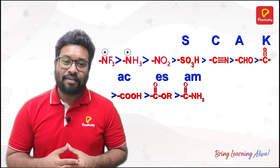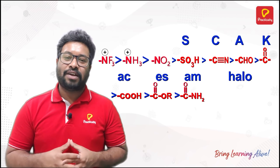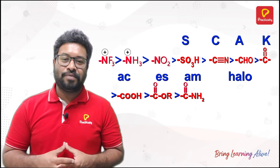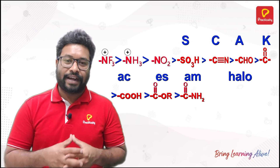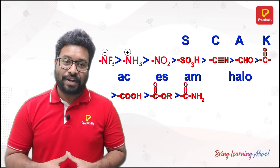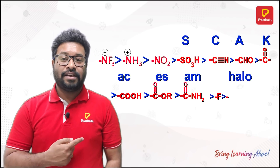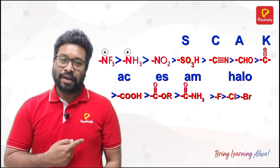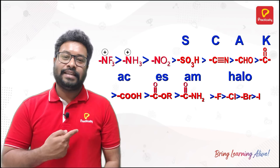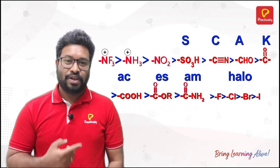That is then followed by halo. We know that all the halo groups, if we arrange them in electronegativity order, it is fluorine, chlorine, bromine, iodine — and that's what it is here also.